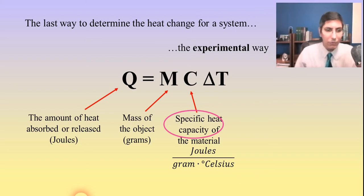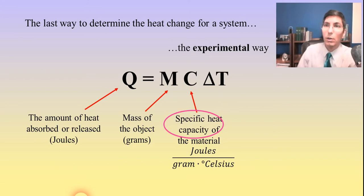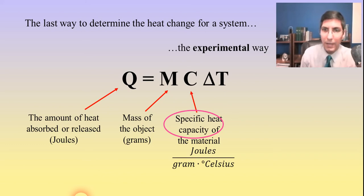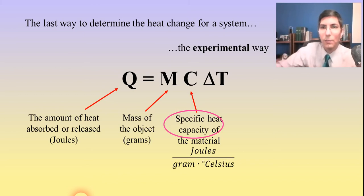On the other hand, let's say 30 seconds after you turn on that stove you decide to touch the bottom of the pot. Are you going to get burned? Yes you will. Because the metal — the aluminum, or copper, or whatever material that pot is made of — has a very low specific heat capacity, so it heats up very quickly. It has a very low resistance to temperature change. That's what specific heat capacity, or specific heat, is all about.